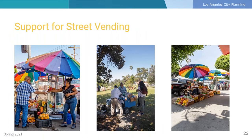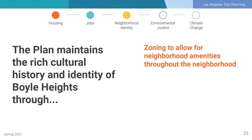Throughout the community plan update process, stakeholders have voiced the importance of street vending playing an important role in the local economy. Street vending is a key source of fresh and prepared foods in areas underserved by major grocery chains, and is a means to activate the public realm as well as providing opportunities for entrepreneurship. The plan supports current street vending efforts and contains policies that encourage cleaning, preparation and disposal facilities as part of future projects in the community.